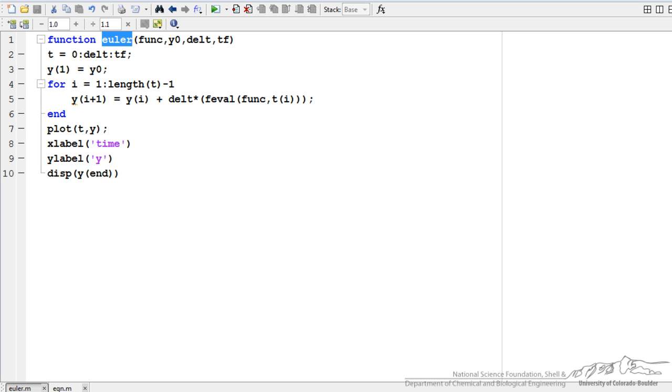It is a function of a function because we want to write it so we can put any function into Euler and it will spit out the result. So I have got a function here which is going to be something that the user puts into the arguments of the Euler function.